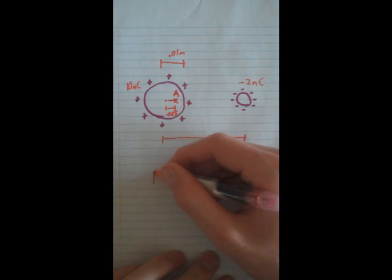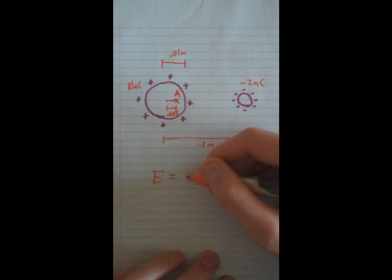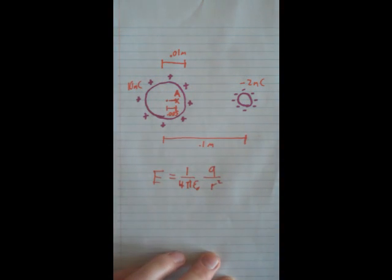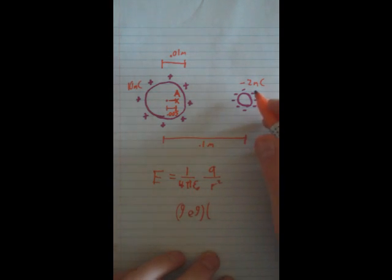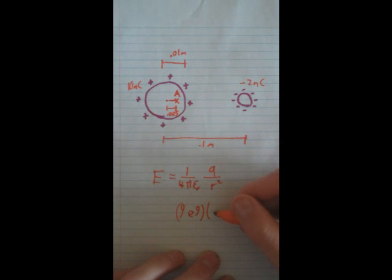So we just need to write the simple E equals 1 over 4πε₀ times q over r squared. So that's just going to equal 9×10⁹ times this charge, because this one won't affect it, negative 2×10⁻⁹, because we have to convert nanocoulombs to coulombs, over